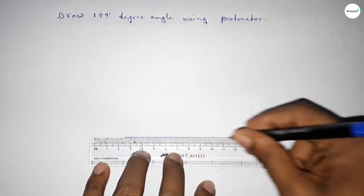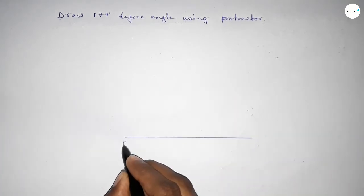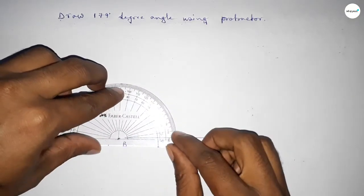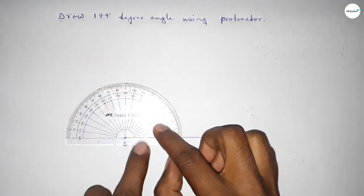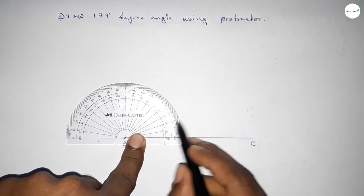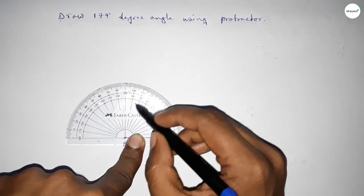First, drawing a line. Next, taking point B here and point C here. Now putting the protractor on point B perfectly, then counting the angles. This is 0, 10, 20, 30, 40, 50, 60, 70, 80...